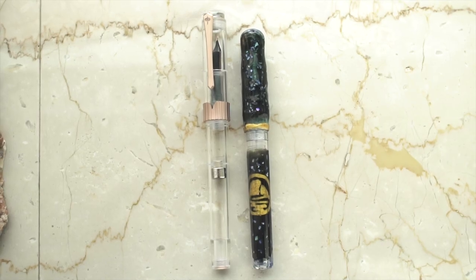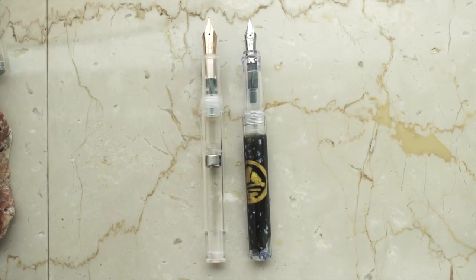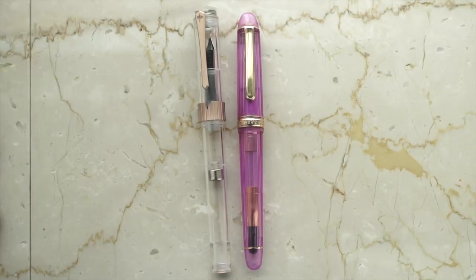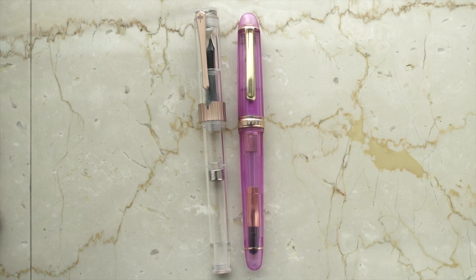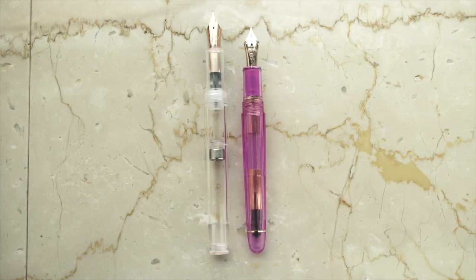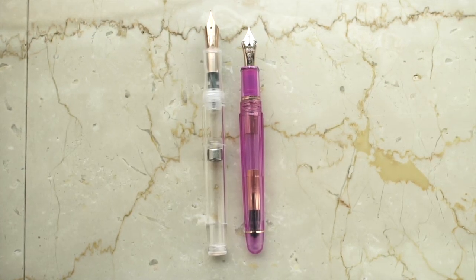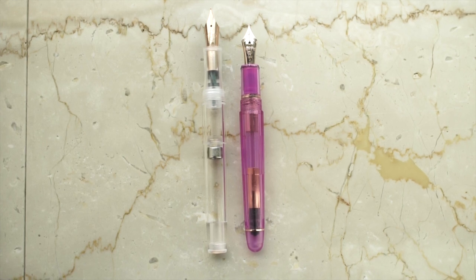It's longer than a Pilot Kakuno. And its nib looks like it's slightly larger. It's slightly longer than a Platinum 3776, but about the same girth. And it's much longer than the Platinum when it's uncapped, though their nibs look like they're about the same size.